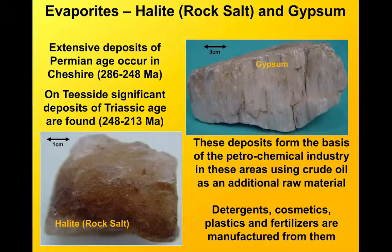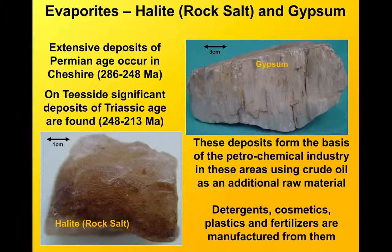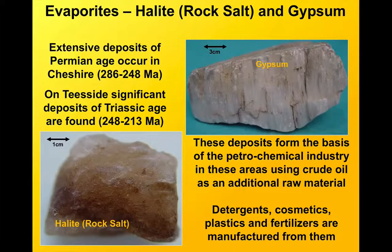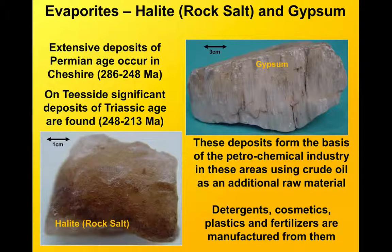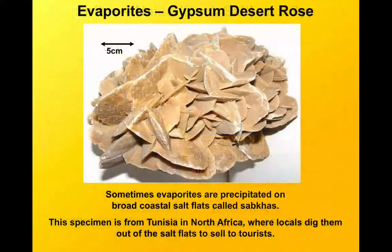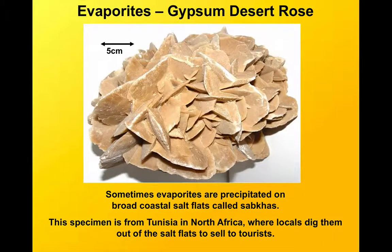The last type of chemical sediment we need to think about are the evaporites. There are a number of different minerals that can be deposited this way — this is where we have a body of water that dries out, leaving behind the dissolved minerals. We can find gypsum as a deposit; the northeast of England has significant deposits there. Or we can find halite, common rock salt, that you might put on your chips or spread on the roads to de-ice them in winter — they're very important economic resources. Sometimes we even find them in the beautiful form of a desert rose: bladed crystals of gypsum that form in coastal salt flats.